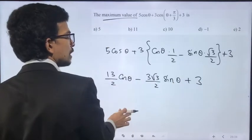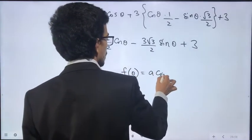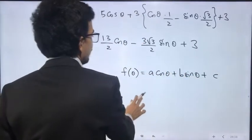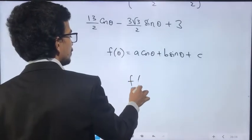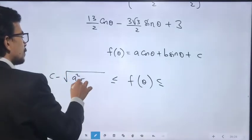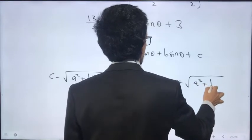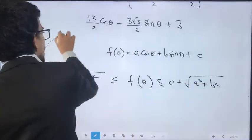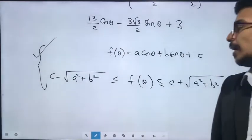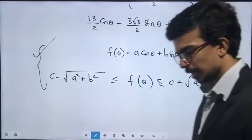The maximum value of f(θ) = acos(θ) + bsin(θ) + c is c + √(a² + b²). The range is from c - √(a² + b²) to c + √(a² + b²).